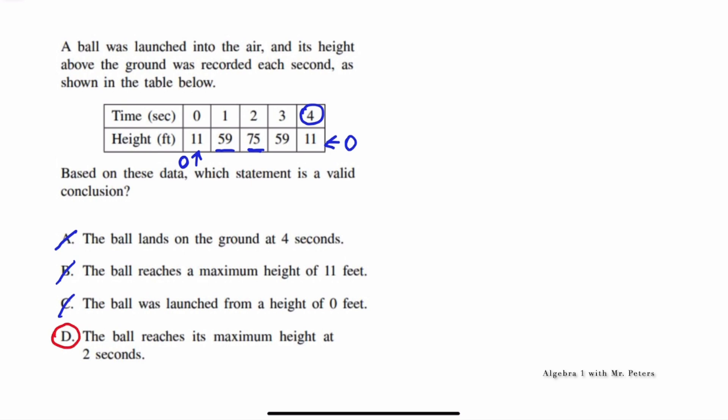And when we read it to verify, it says the ball reaches its maximum height at two seconds. So at two seconds, we notice what? We have the highest value in terms of feet. So please make sure you guys understand how to interpret the graph when you have a word problem like this.